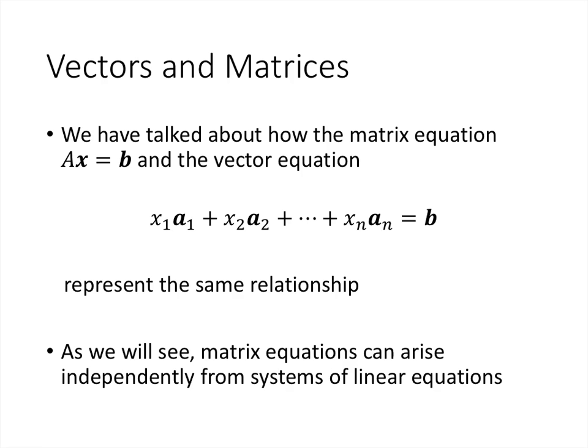Let's recall that we've talked about the matrix equation Ax equals b and the corresponding vector equation x1*A1 plus x2*A2, all the way up through xN*AN equals b, where the A vectors are the columns of the matrix A. Those two equations represent the same relationship — solved the same way using the same augmented matrix and row reduction. But matrix equations can actually arise independently from systems of linear equations; we're going to see equations like Ax equals b come up in different ways.